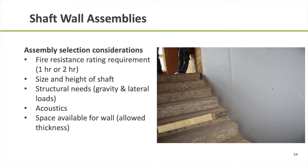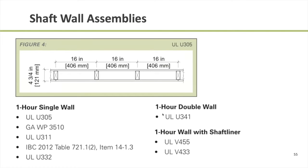Here are some available one-hour-rated wall systems that could work as shaft enclosure walls, broken into three categories. Single wall systems: a single row of wood studs typically clad on both sides with gypsum wallboard — to get better acoustical performance, usually with a resilient channel on one face. Double wall systems: two rows of wood studs with about a one-inch gap between them, which has significant benefits for acoustics. And shaft liner systems — a means of using thicker, typically one-inch-thick gypsum wallboard panels specifically made for shaft and unit separation wall applications.